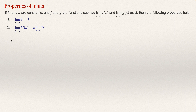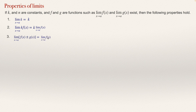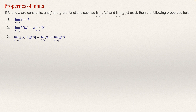The third property of limits: if we have an addition or subtraction of functions — the limit of a function plus or minus another function as x approaches a — that will be the limit of the first function plus or minus the limit of the second function. If the sign is plus, there will be a plus; if the sign is minus, it will be a minus.